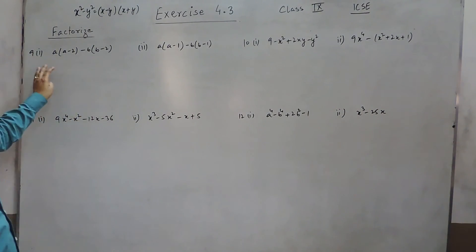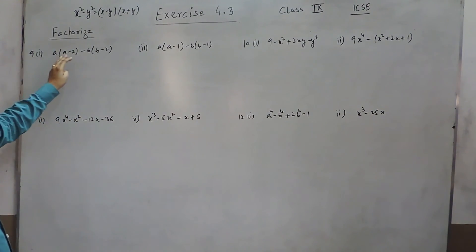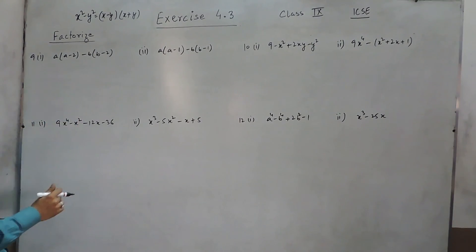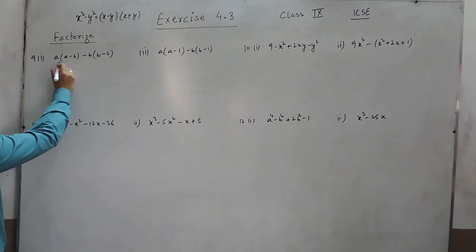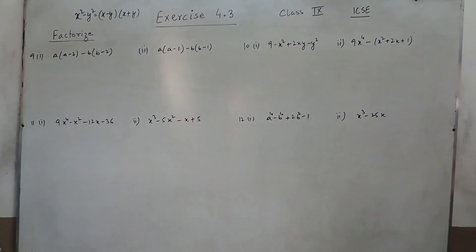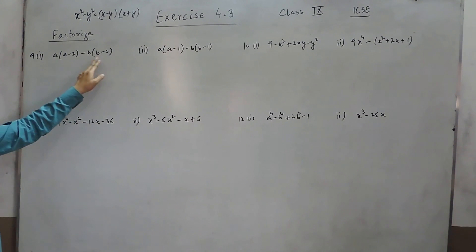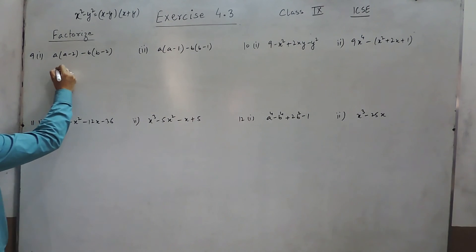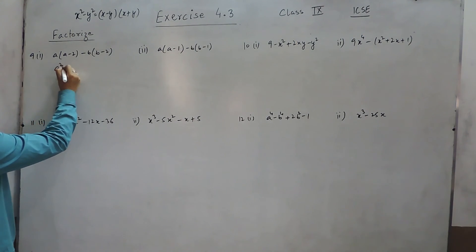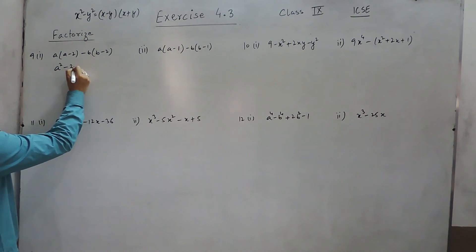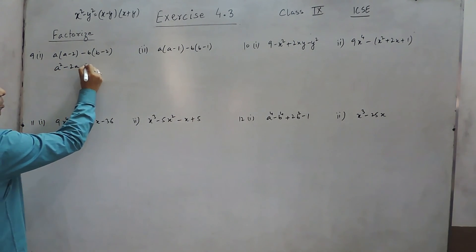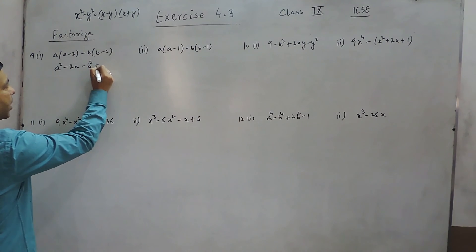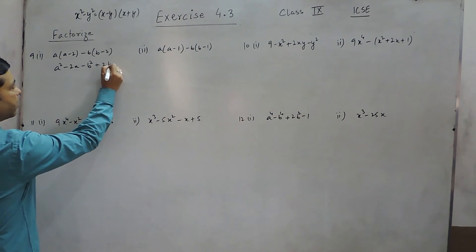Hello everyone. Question 9 in Exercise 4.3 is a multiply by a minus 2 minus b multiply by b minus 2. If we solve it, it is a squared minus 2a minus b squared plus 2b.